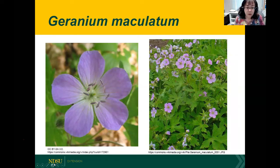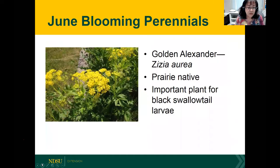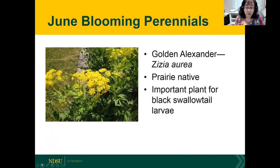Another June-blooming perennial is Geranium maculatum, which starts blooming in late May in North Dakota and goes into June. If you look at the photo, you'll notice the petals have interesting lines or nerves — these are called nectar guides. Nectar guides tell the bees where to go for nectar, drawing the bee towards the center of the plant to the nectaries. Next is Golden Alexander, a native to our prairies with beautiful yellow-blooming flowers about three feet tall. This plant supports more than just bees — it's an important plant for black swallowtails. It looks like dill and is in the same Apiaceae family as dill and carrots.